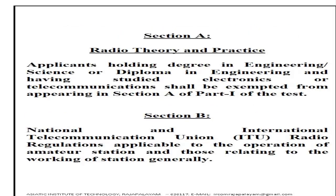Section A: Radio Theory and Practice. Applicants holding a degree in Engineering, Science, or Diploma in Engineering and having studied Electronics or Telecommunication shall be exempted from appearing in Section A of Part 1. Section B covers National and International Telecommunication Union (ITU) Radio Regulations applicable in the operation of Amateur Stations and relating to the working of stations generally.